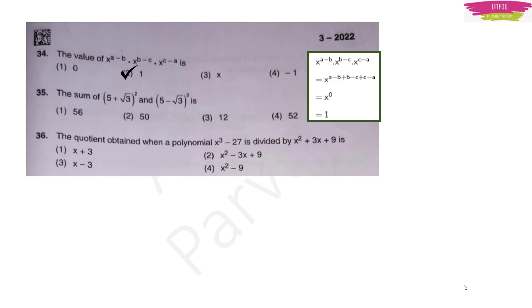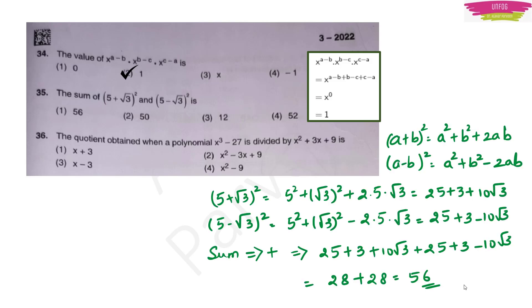The sum of (5 + √3)² and (5 − √3)²: expand each using (a + b)² and (a − b)² identities, then add the results. When you add those answers, you get 56. Option 1 is the right answer.